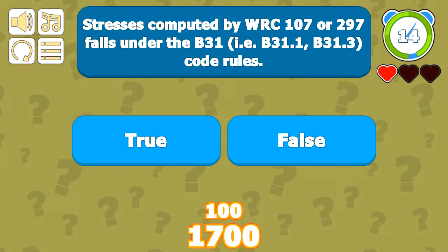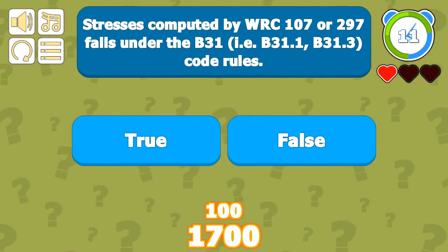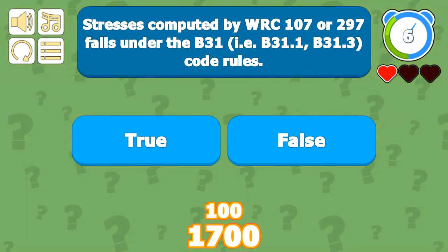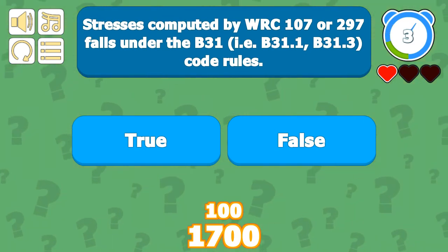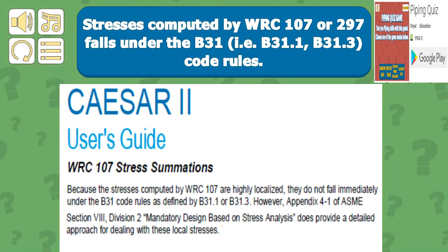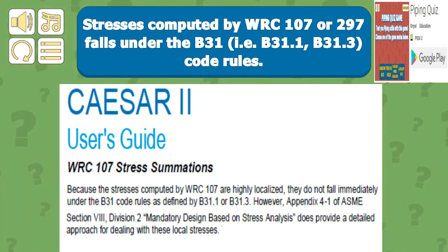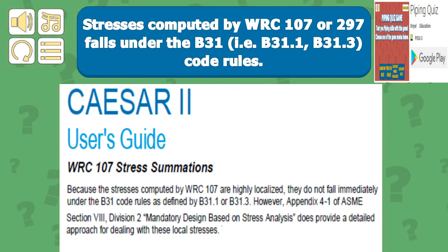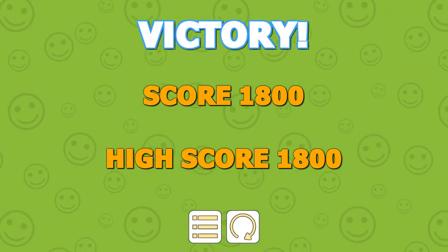Stresses computed by WRC 107 or 297 do not directly fall under B31 code rules, because local stresses are involved. Since the stresses computed by WRC 107 are highly localized, they do not fall immediately under B31 code rules. However, ASME Section VIII Division 2 does provide a detailed approach for dealing with these local stresses. That was all in this WRC quiz — see you again, bye.